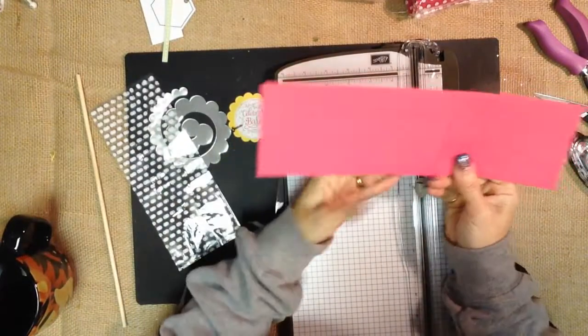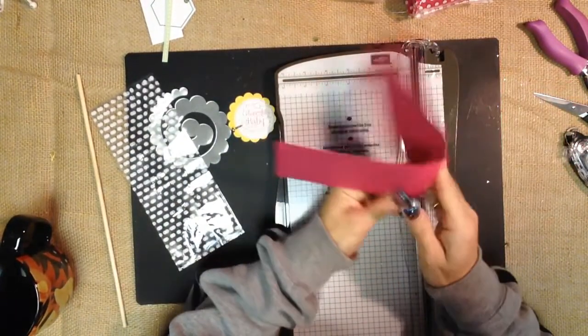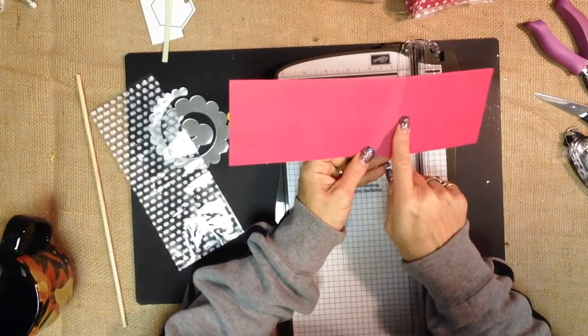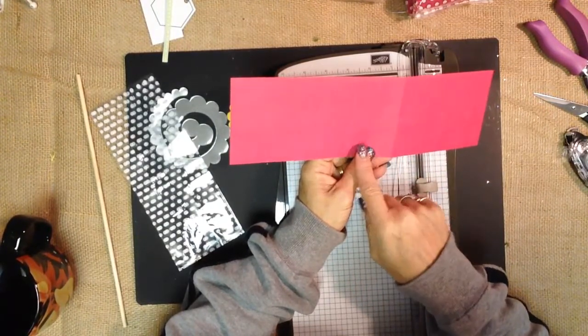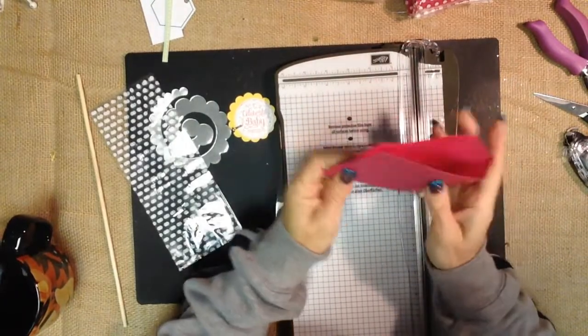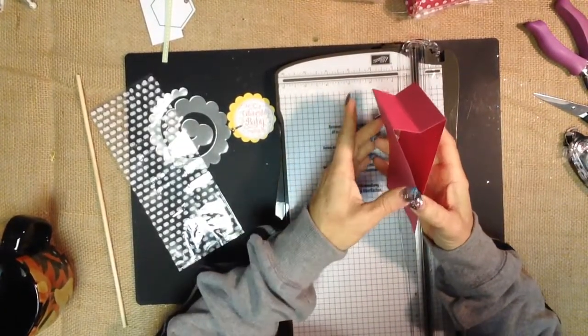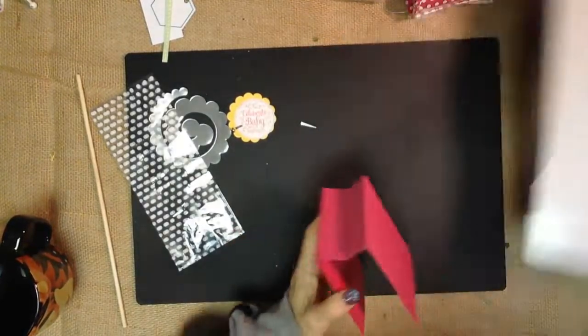And we're going to crease. And so what ends up happening is you have your center mark here. So that's the 6 inch in half. And then on either side of the 6 inch, you've got it scored at 1 inch. So you've got 3 marks, and that will give you a valley fold. Okay, so let's set that off to the side.